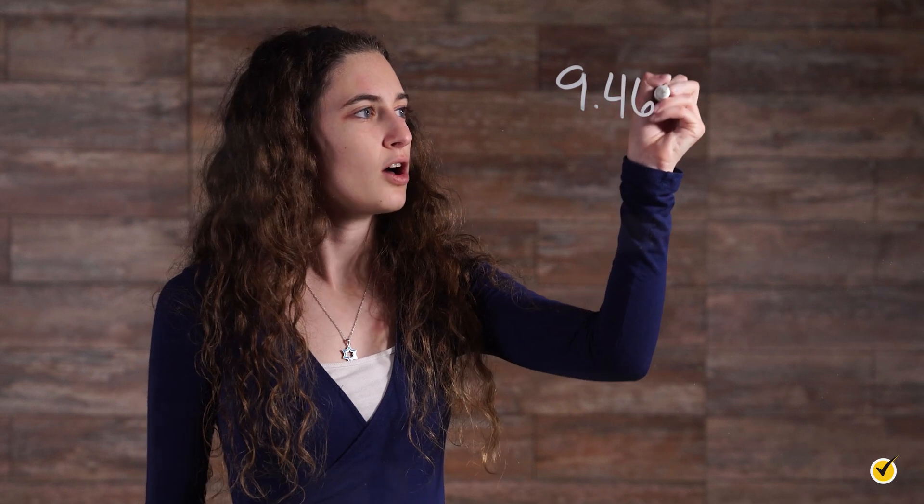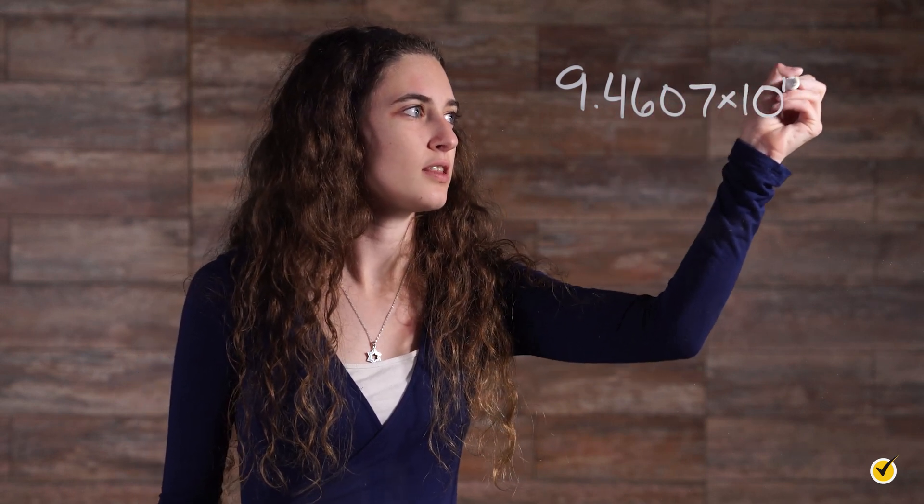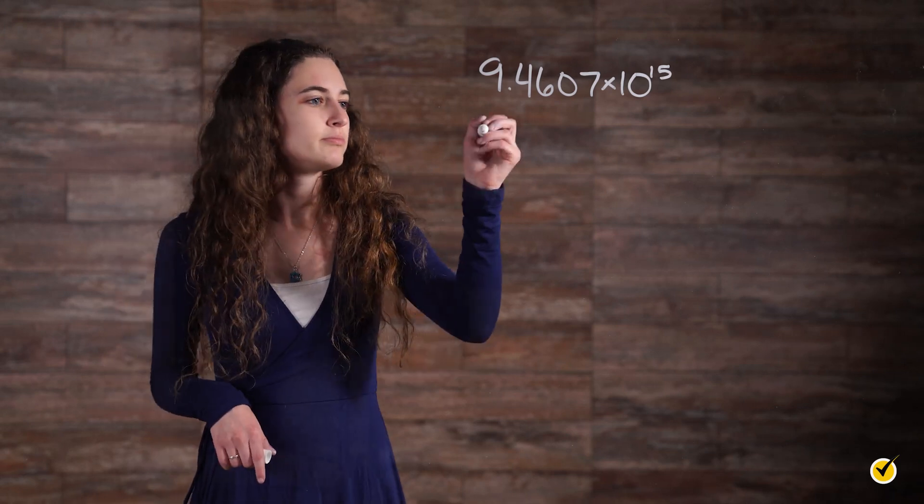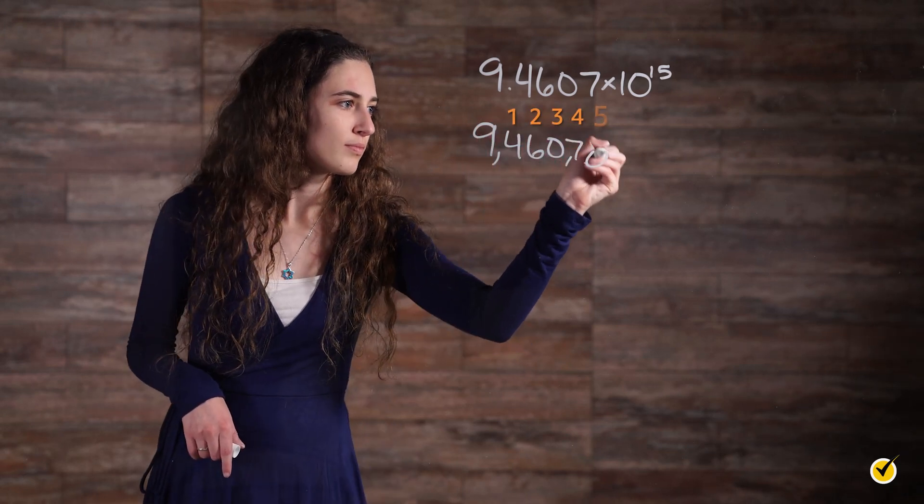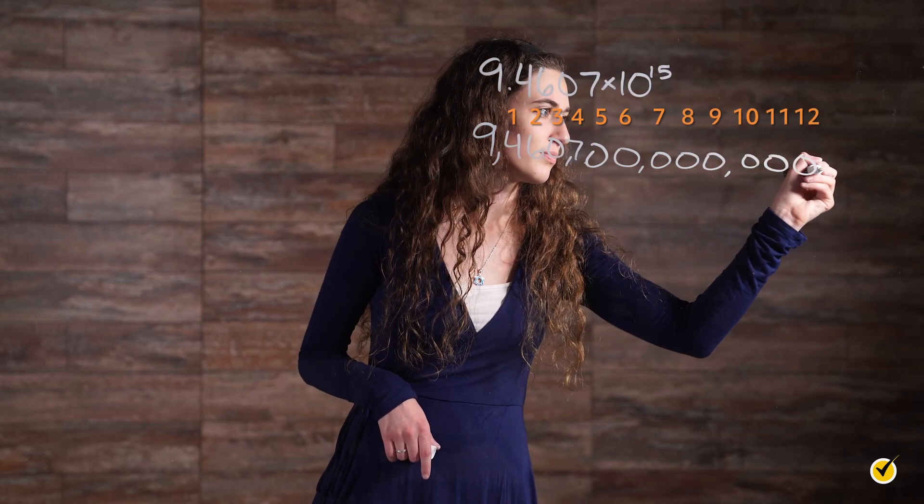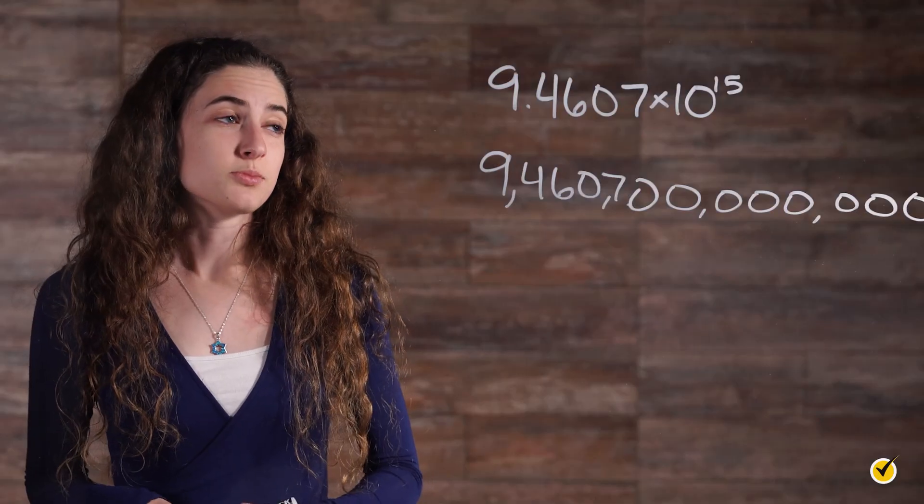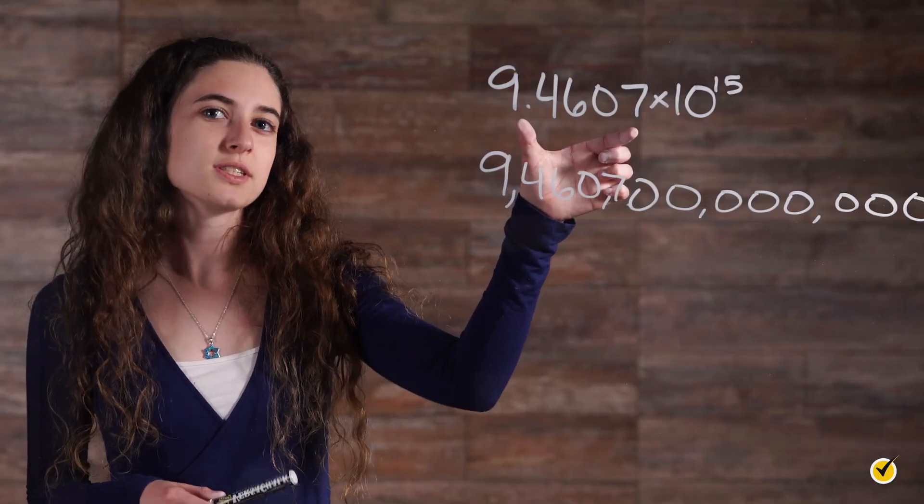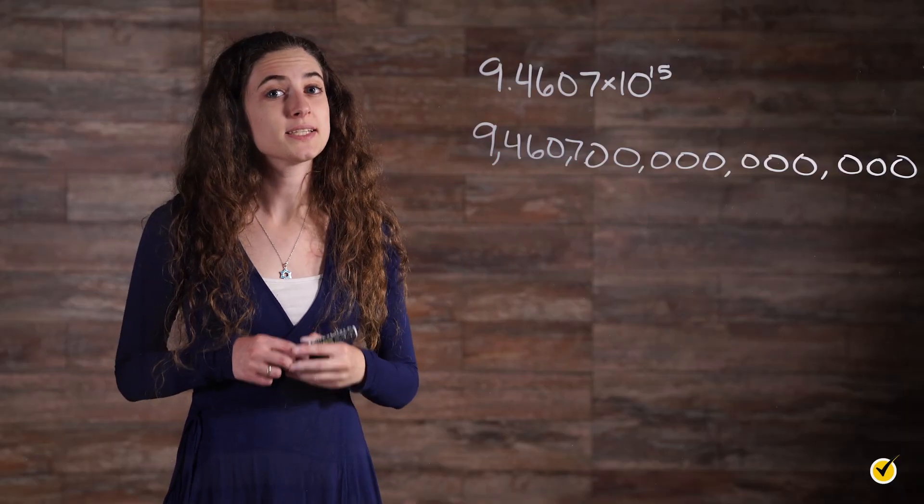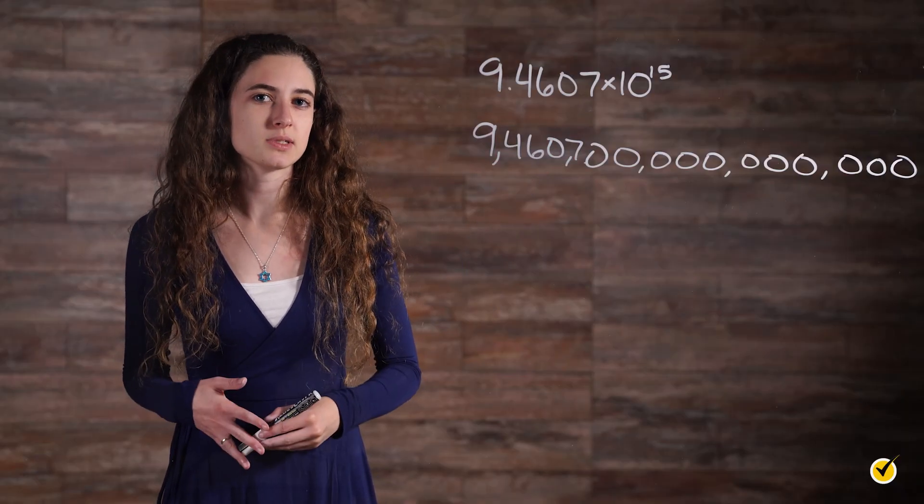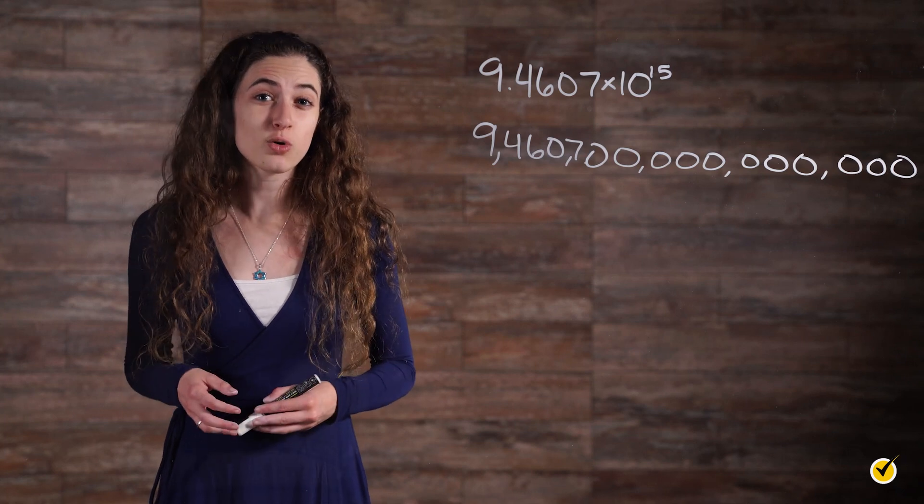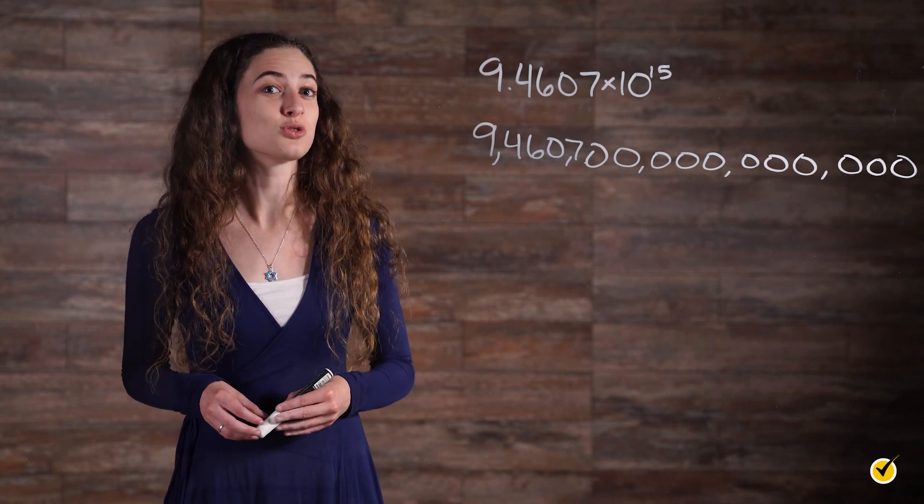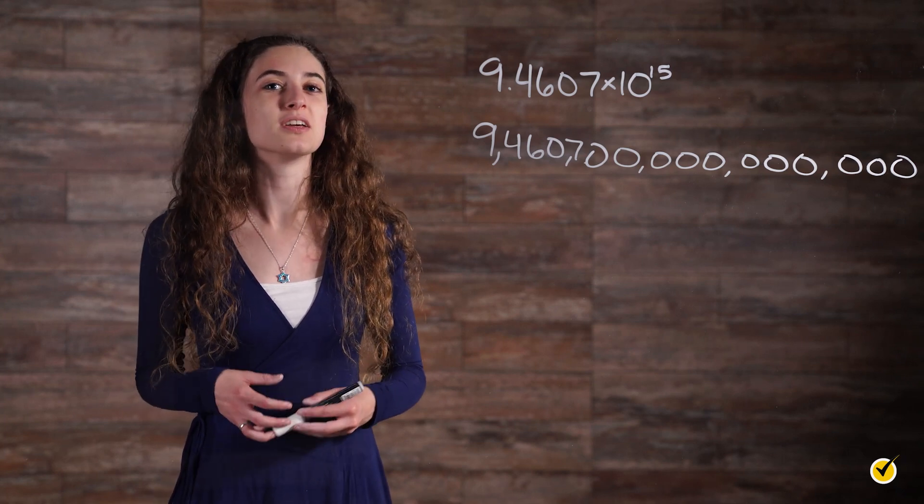A light year can also be expressed as 9.4607 times 10 to the 15th meters. We can easily change this number to standard form. Start with the decimal part, 9.4607, and multiply by 10 a total of 15 times. This tells us that a light year is 9,460,700,000,000 meters.